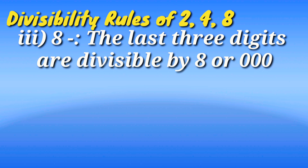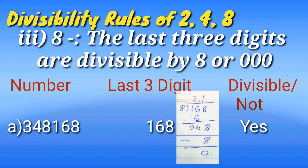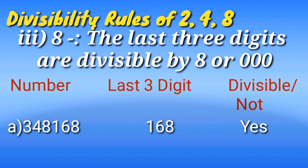Number 3: Divisibility test of 8. If the last three digits are divisible by 8 or are 000, the number is divisible by 8. For example, 3,48,168. The last three digits are 168. 168 is fully divisible by 8, so the whole number is divisible by 8.